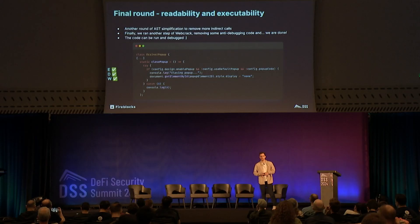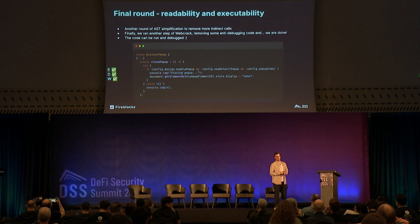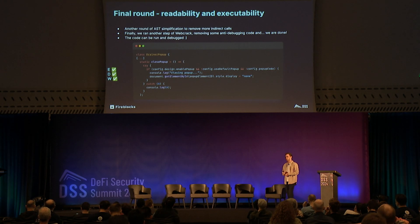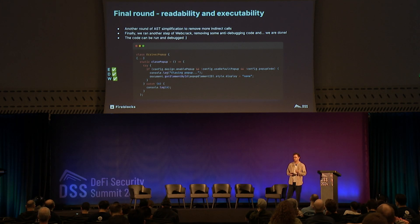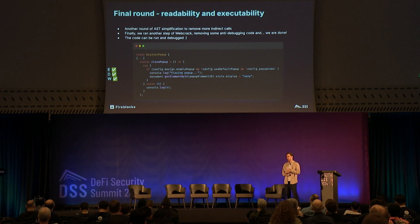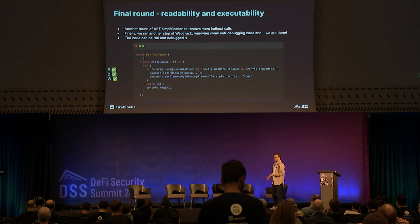The final round was to get both perfect readability and executability. We ran a round of AST simplification after the string-fetching dynamic execution step. And finally, in order to debug it, we ran a final round of Webcrack, which removed all the anti-debugging features present in the Angel Drainer. That allowed us to get to clean code — meaning after a few weeks of work, or nine minutes of presenting, we realized this is actually just a close-as-popup function, which shows you the benefit of obfuscation from an attacker's perspective: we had to work really hard to get to a function that doesn't do anything important. But once we solved that, we solved everything, and now we can inspect and debug the code while it's trying to drain us.